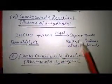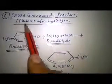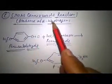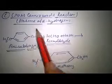Students, the next reaction is the Cannizzaro reaction, which occurs in the absence of alpha hydrogen. In this, formaldehyde reacts with the base and on heating gives methyl alcohol and sodium formate.